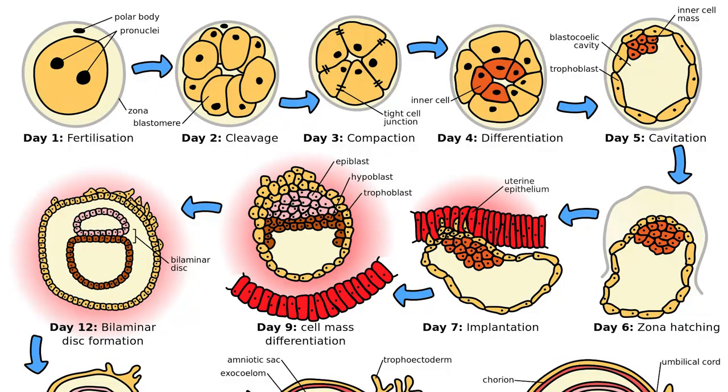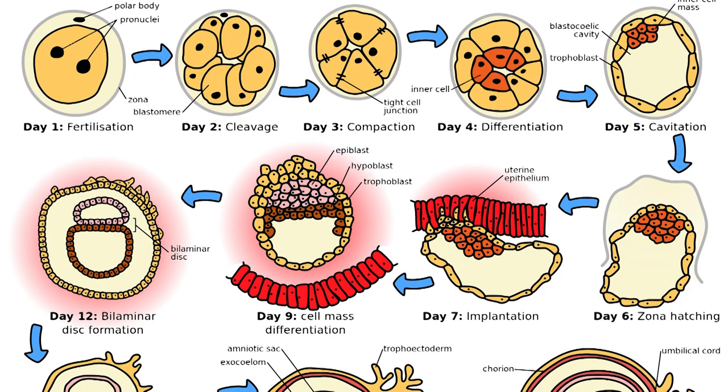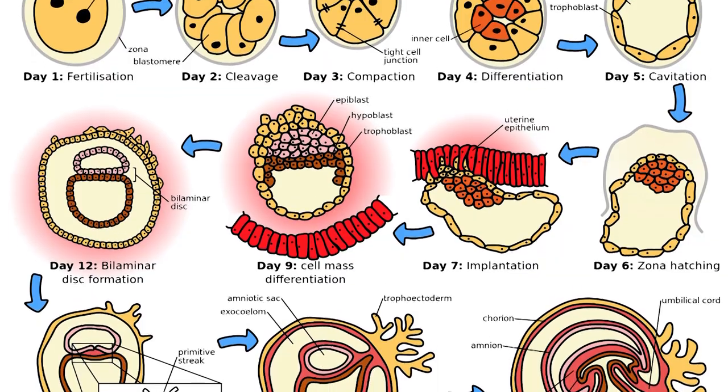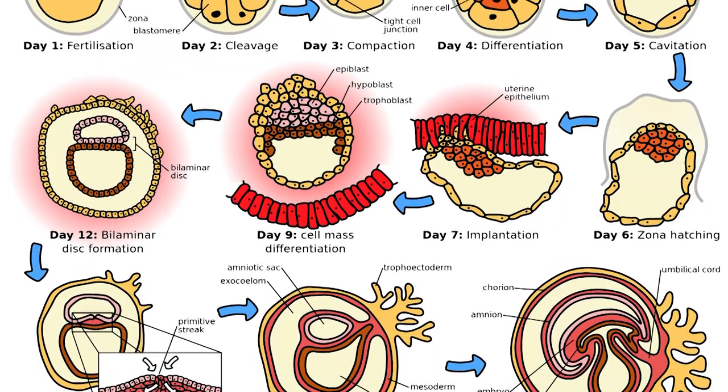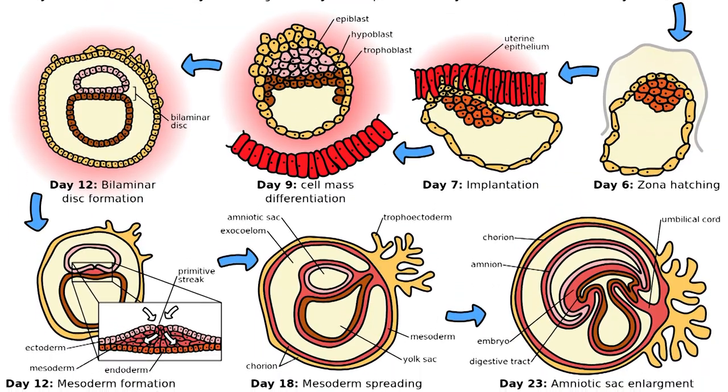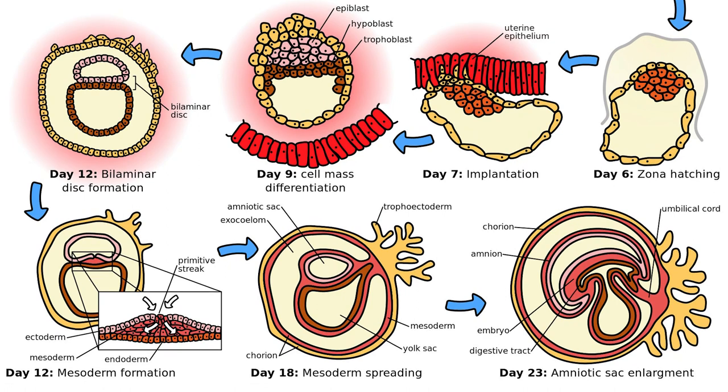Fertilization occurs when the sperm cell successfully enters and fuses with an egg cell. Embryogenesis covers the first eight weeks of development, and at the beginning of the ninth week the embryo is termed as a fetus.